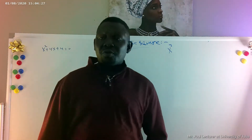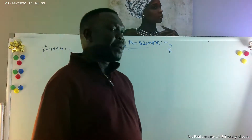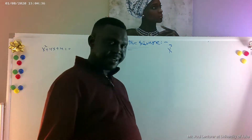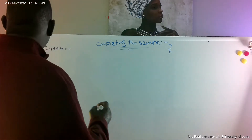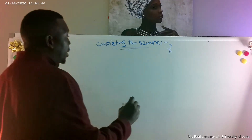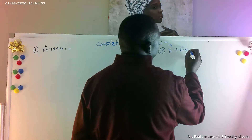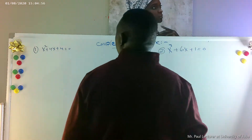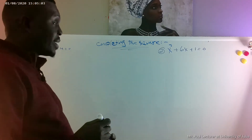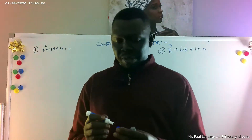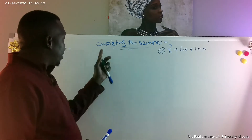Completing the square is one of the methods for solving an equation that does not factor. I have two equations here. Number one is x squared plus 6x plus 1 equals zero. Number two is x squared plus 4x plus 4 equals zero. I know one can factor and one cannot.